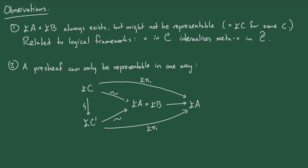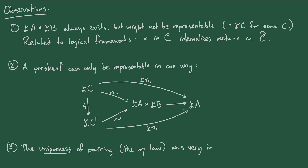In general, it will come up a lot that there's some presheaf that turns out to be isomorphic to Yoneda of some object — when that happens, we call that object the representing object of the presheaf. Finally, the uniqueness of the pairing map — the eta law — was very important to the story told today. In syntax, people often think of eta laws as something complicated, but in category theory, eta laws actually greatly simplify the situation. It's more complicated to explain what a connective is when it doesn't have an eta law.